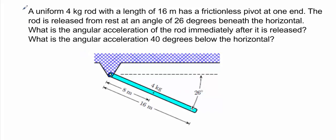This is Dr. Holt. In this video I want to solve two problems. The first problem is I have a uniform 4-kilogram rod with a length of 16 meters. It has a frictionless pivot at one end. The rod is released from rest at an angle of 26 degrees beneath the horizontal. What is the angular acceleration of the rod immediately after it's released? And then we want to find the angular acceleration at 40 degrees below the horizontal.